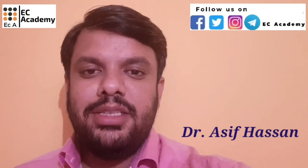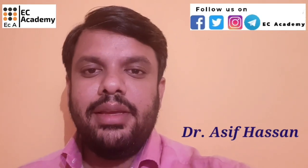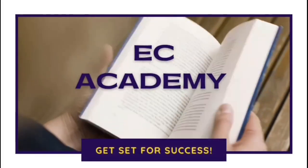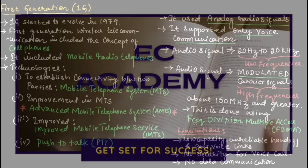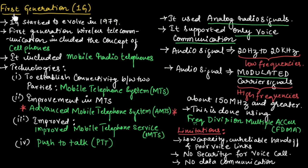Hello friends, welcome to ESA Academy. In this lecture, let us understand first generation of mobile communication system. In wireless telecommunication systems, we have five generations from first generation until fifth generation. Let us understand the first generation of wireless telecommunication system.